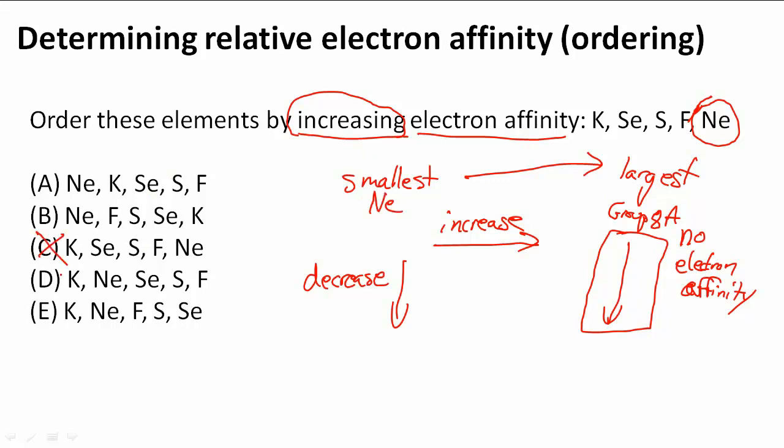So we know that K, the ones that begin with K are actually wrong. So C, D, and E are out of the running in the first place. Now we just have to decide between A and B.